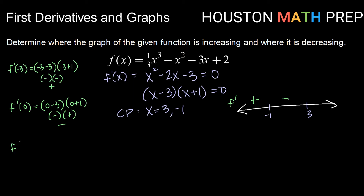For the interval above 3, take x equals 7: f'(7) = (7 − 3)(7 + 1), which is positive times positive — overall positive. Now that we have the sign of the first derivative on each interval, we want to synthesize that information.